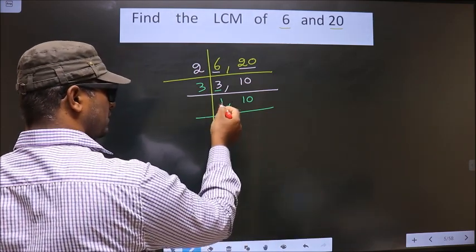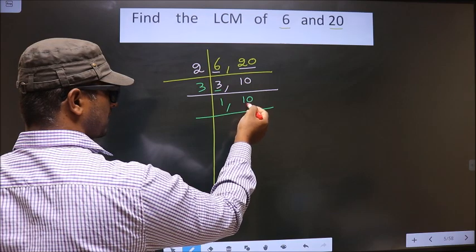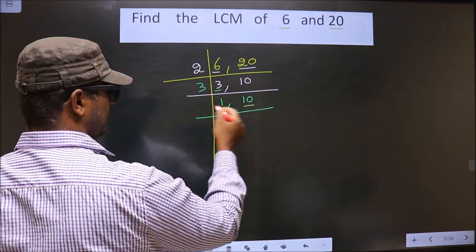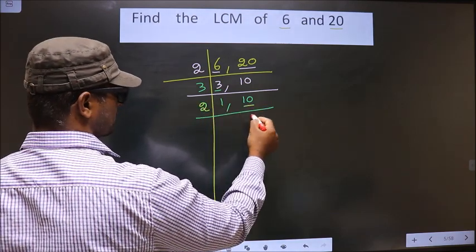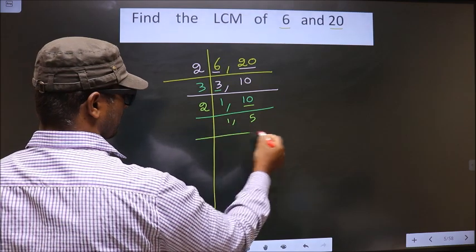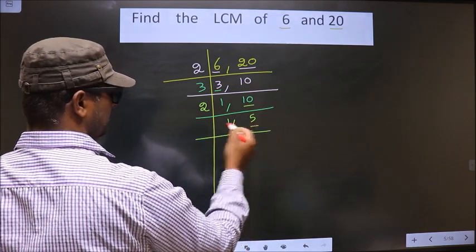Now, we got 1 here. So you focus on the next number that is 10. 10 is nothing but two 5s.